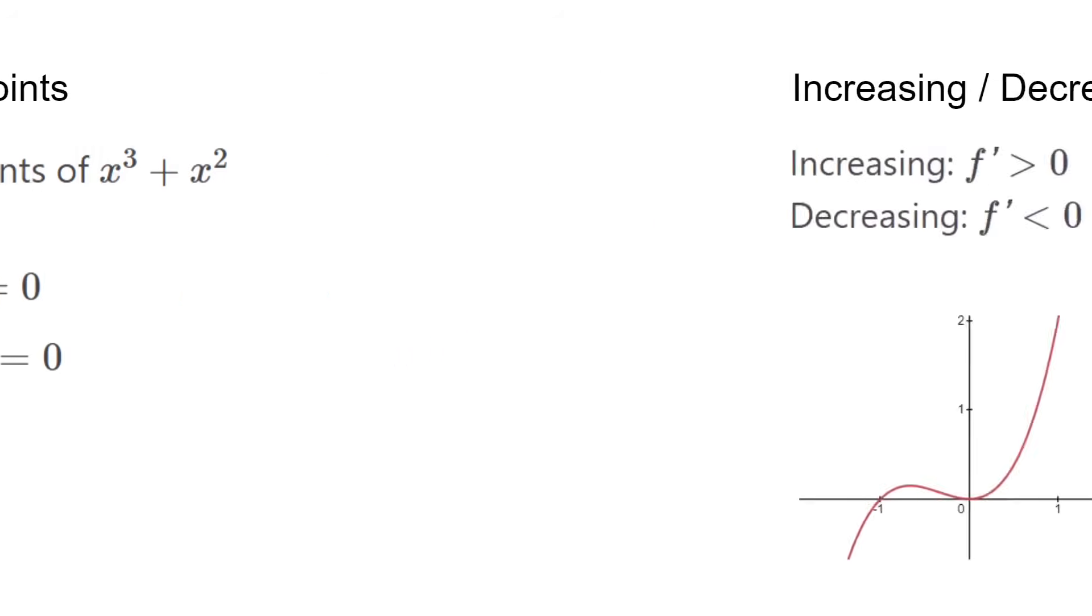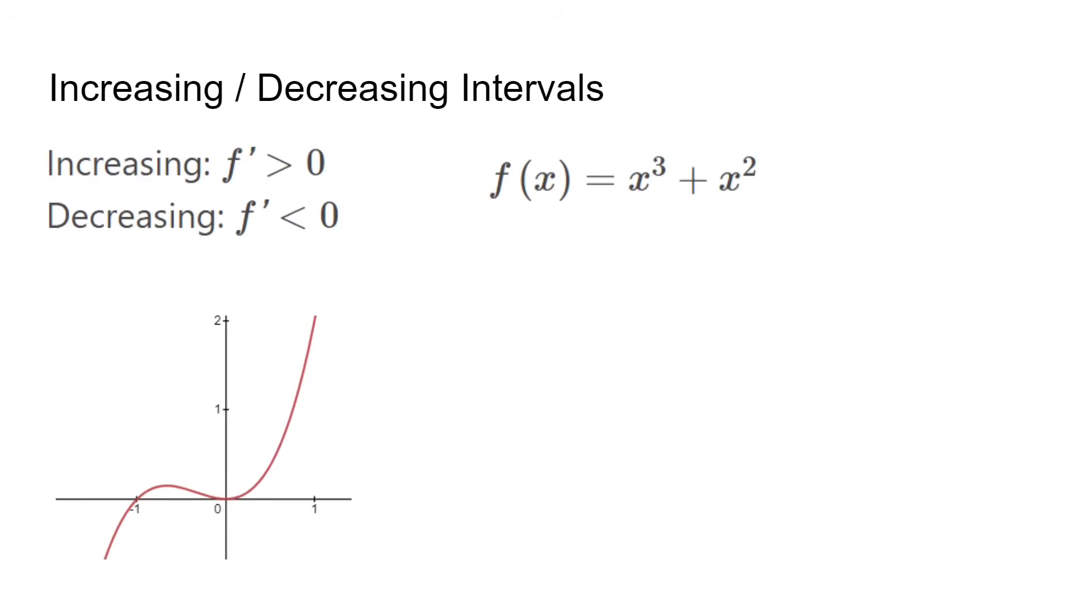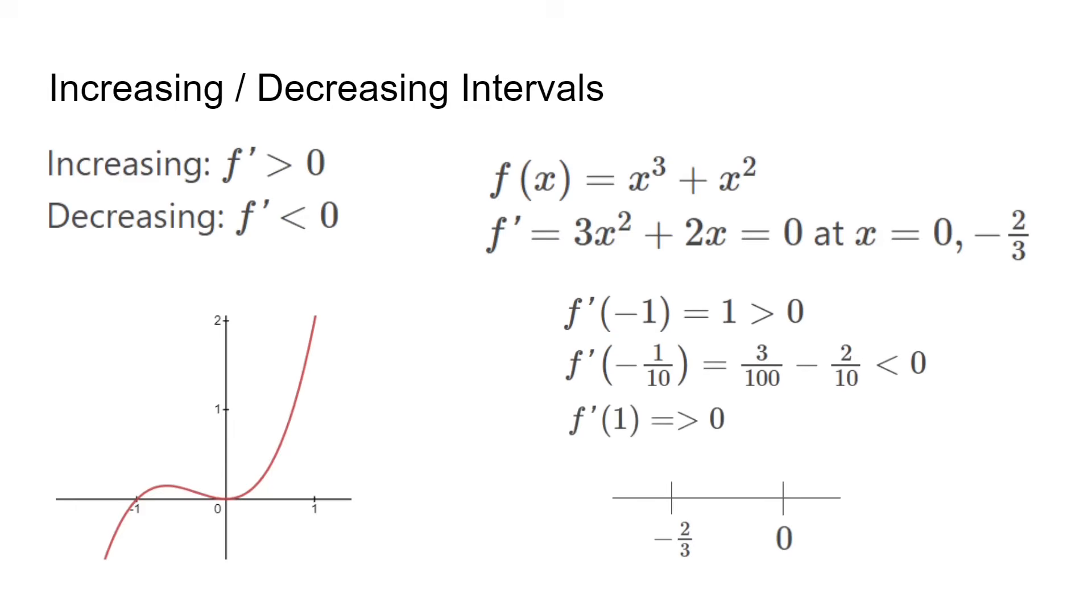To find intervals of increasing and decreasing, we test the values around the critical points. Using the same function, we plot the points on a number line. In each interval, plug in a random number and see if it's negative or positive. I use negative 1, negative 1 over 10 and 1 as examples. The function is increasing from negative infinity to negative 2 over 3 and 0 to infinity. It decreases from negative 2 thirds to 0. This is also verifiable looking at the graph.